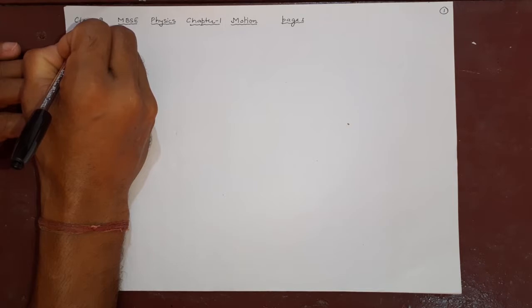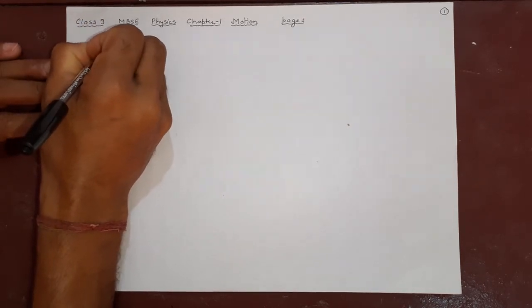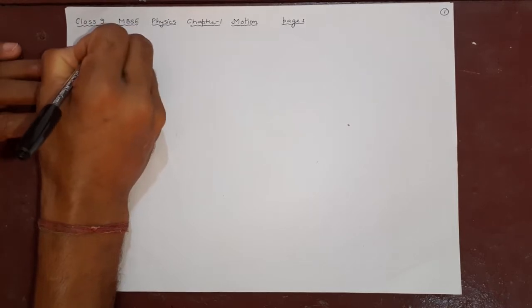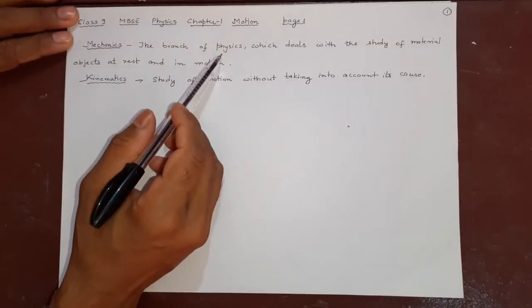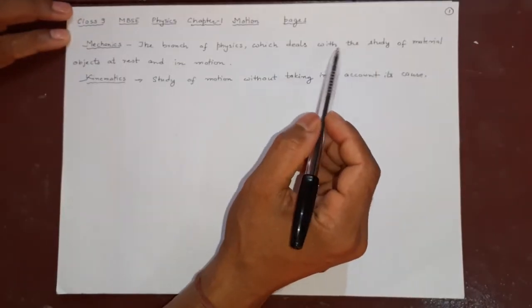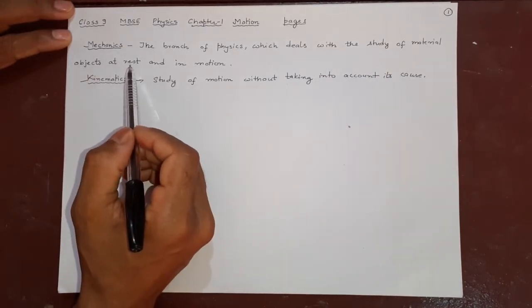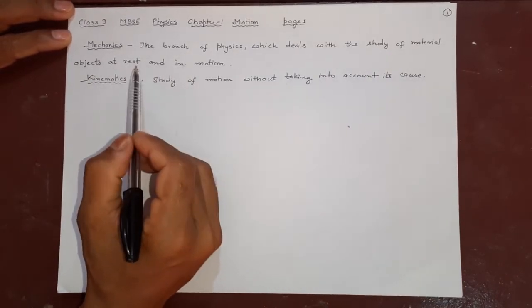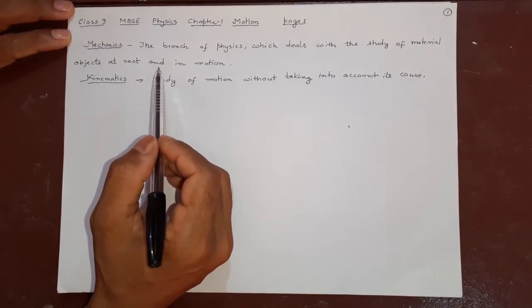First of all, in order to understand, you have to study Mechanics. Mechanics is the branch of physics — the branch which deals with, which makes you study materials when they are at rest or they are in motion. So they want to study about its motion — that means speed, velocity, all these things. This is called mechanics.